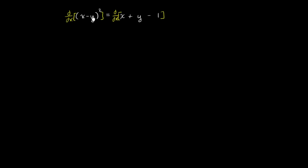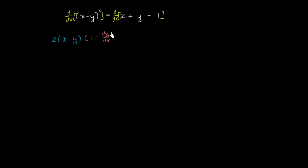On the left-hand side, we essentially are just going to apply the chain rule. We have the derivative with respect to x of (x minus y) squared. The chain rule tells us this is going to be the derivative of the something squared with respect to the something, which is 2 times (x minus y) to the first power, times the derivative of the something with respect to x. The derivative of x with respect to x is just 1, and the derivative of y with respect to x is what we're solving for — so it's 1 minus dy/dx.